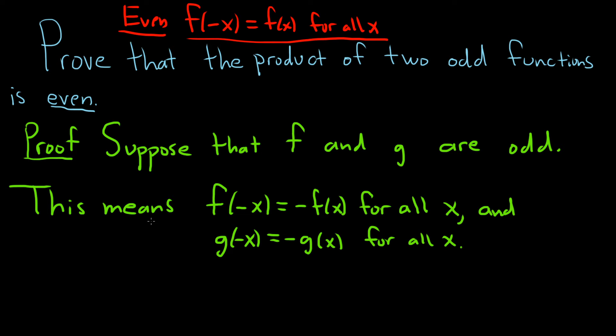In this case, we have to show that the product is even. The product is fg, and it takes an element x and gives you f of x times g of x. So we have to make sure this is even. What we'll do is replace this x with negative x.